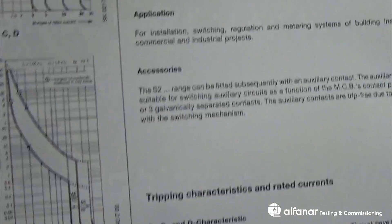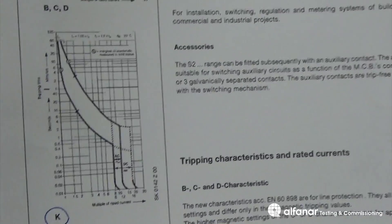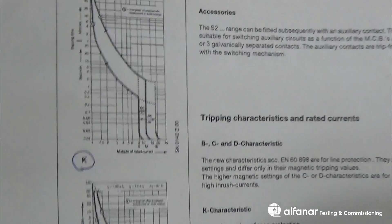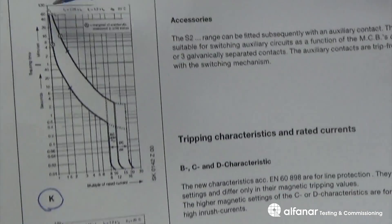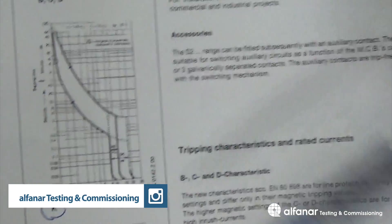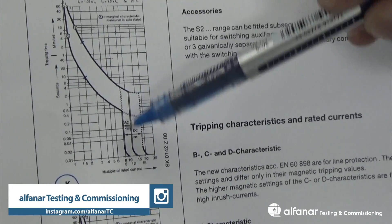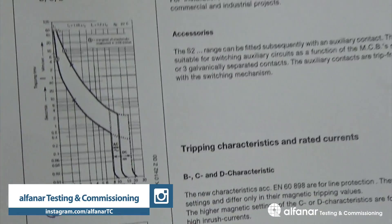As we can see here, we have two curves. This one is for the cold state and the other one is for the hot state of the MCB.